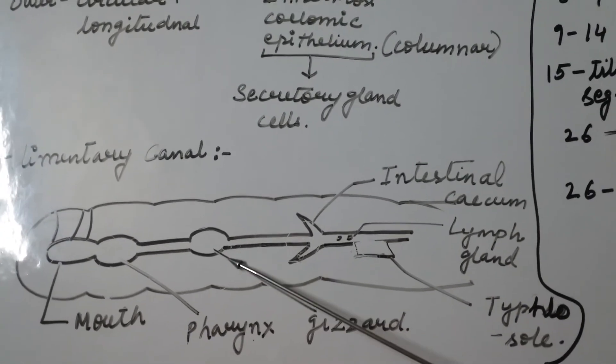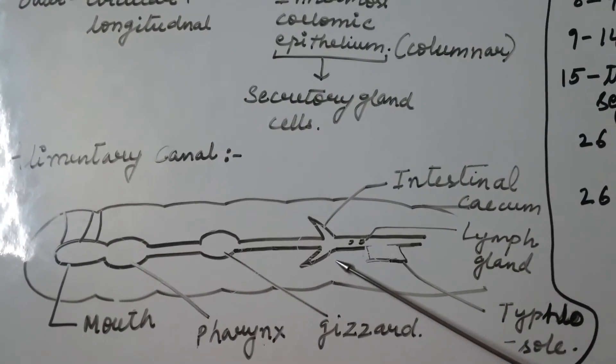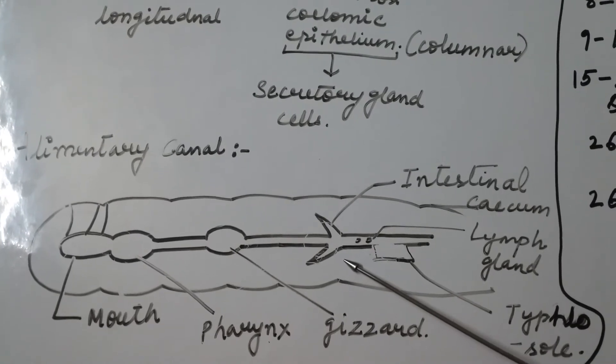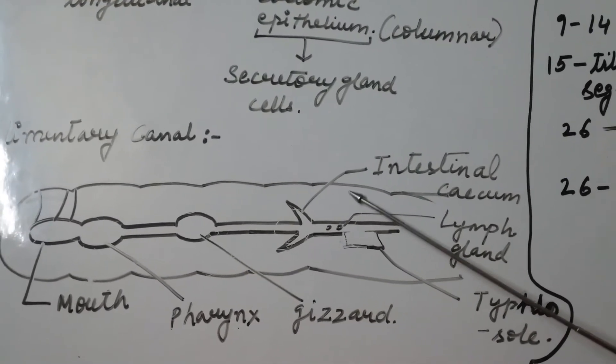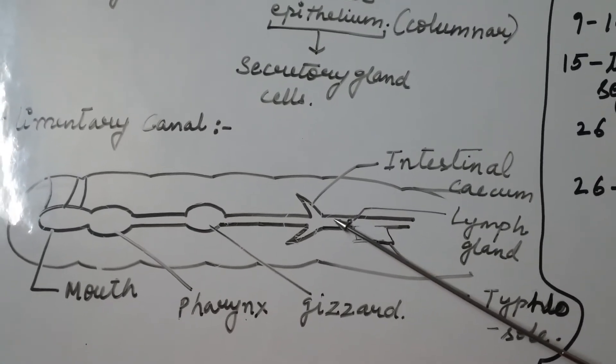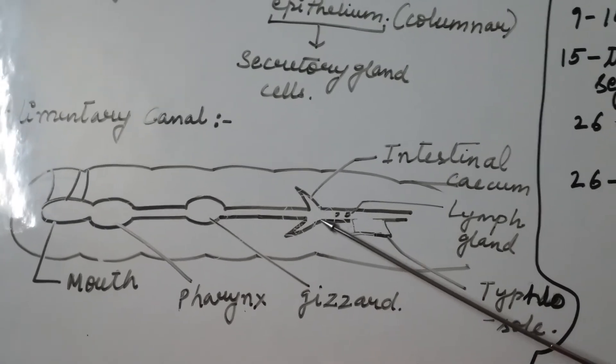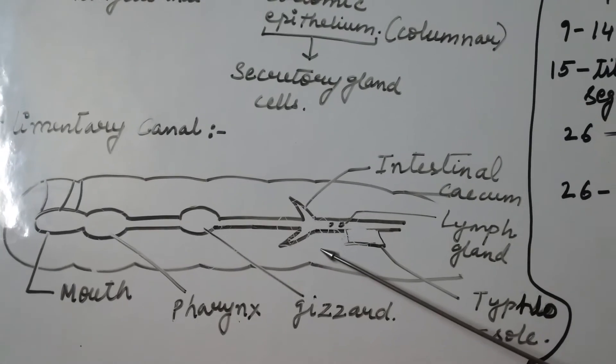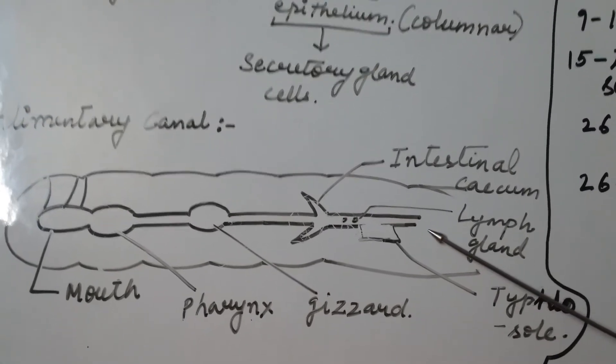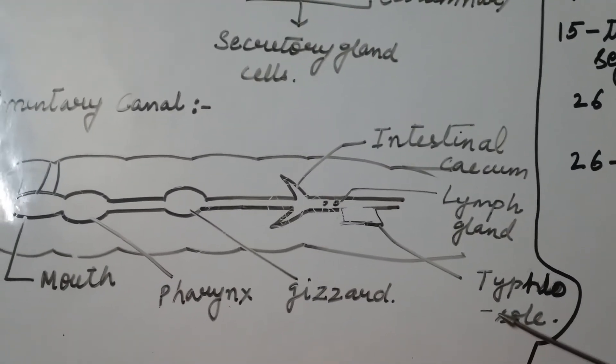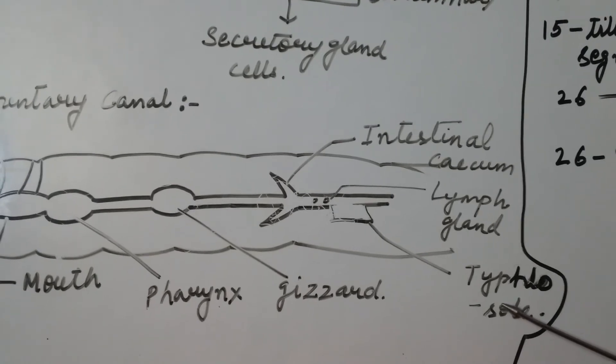After the stomach, there is intestine and it comprises of segments from 15 till the last segment of the body. In intestine, there is a presence of short conical structures or projections called intestinal cecum. These intestinal cecum projects from the intestine at the 26th segment. The characteristic feature between 26 to 35 segment is to have an internal median fold called Typhlosole. This Typhlosole increases the effectiveness in absorption as the fold increases, the absorption of the food increases.